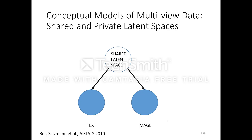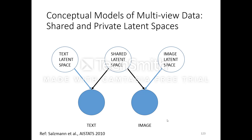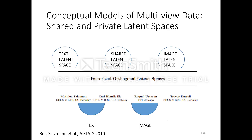In AI Stats 2010, researchers argued that a single shared latent space is insufficient because it places all the burden of grounding the concept onto the transformation. Instead, they proposed a text-specific latent space capturing how text data is expressed, and an image-specific latent space capturing how image data is expressed. Both fuse together to generate the concept. This approach is described in the paper 'Factorized Orthogonal Latent Spaces' from AI Stats 2010.